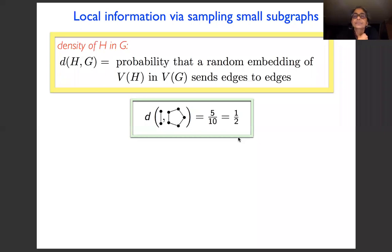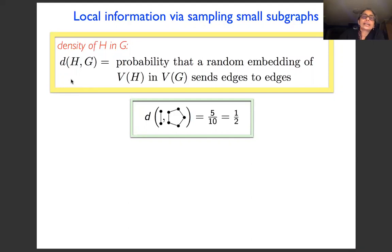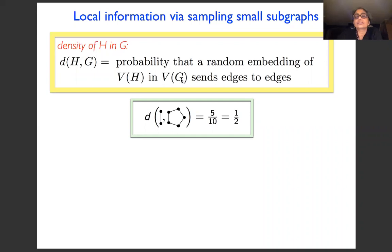The key thing we need is to understand what's called the density of the small graph H in the big graph G. So G is our big graph, H is some small graph — think of H as a triangle or a pentagon. The definition: d_H of G, the density of H in G, is the probability that a random embedding of the vertices of H into the vertices of G will send edges to edges.